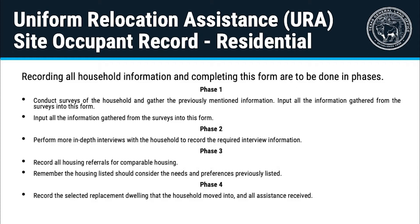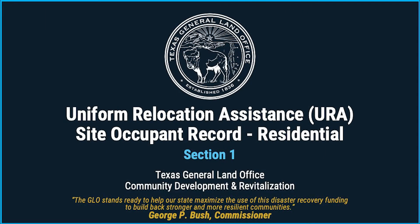Recording all household information and completing this form are to be done in phases. In the first phase, the subrecipient will conduct surveys of the household and input all gathered information into this form. In the second phase, the subrecipient will perform more in-depth interviews with the household to record the required interview information. In the third phase, the subrecipient will record all housing referrals for comparable housing, considering the needs and preferences previously listed. In the fourth phase, the subrecipient will record the selected replacement dwelling the household moved into and all assistance received. For this video, we will use an example of a fictional applicant and location to explain the form.